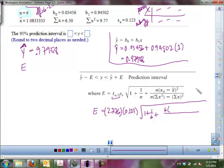x naught, x naught is the x value that we're given, and that is 1 minus x bar, that's 1.0833333, and we square that. So, that's the numerator of this fraction, and then we have an n.